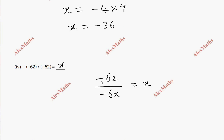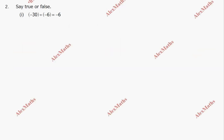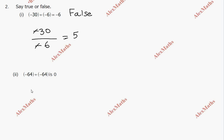Question 2: True or False. First statement: minus 30 divided by minus 6 — the minus signs cancel, giving 30 divided by 6 equals 5. But the statement says false, so the answer is false. Second statement: minus 64 divided by minus 64 — same number, cancels to 1, but the answer is also false.